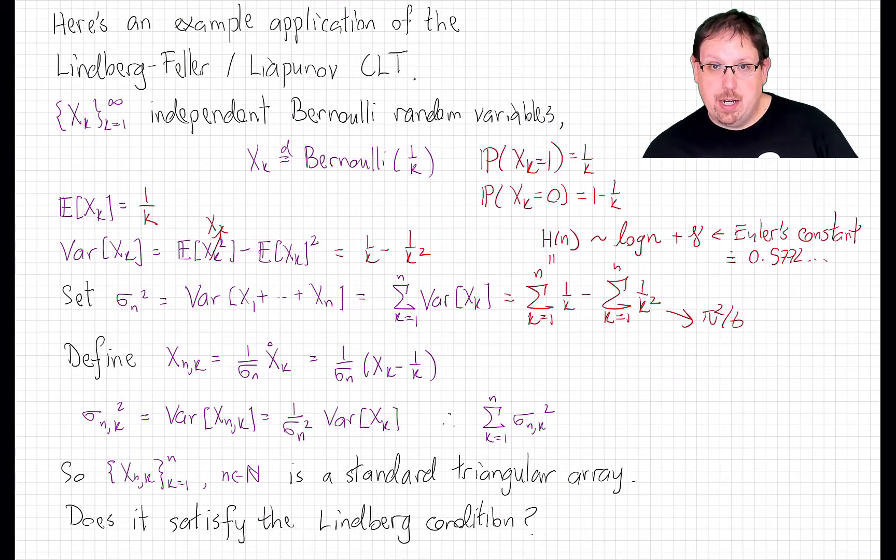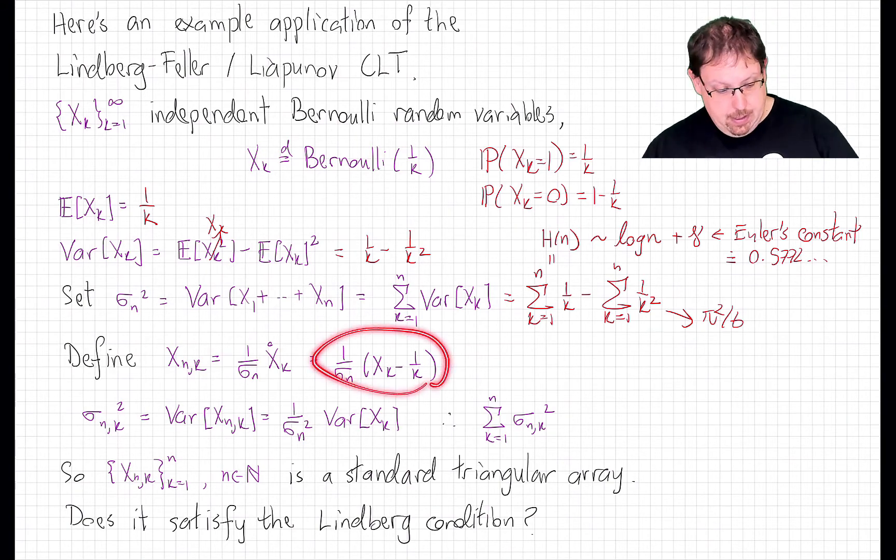If we're going to set up a triangular array of these, we need the sum of the first n to have variance 1 for each n. And so what that means is that, following the setup in the standard central limit theorem, we let X_nk be X_k centered divided by the square root of the variance, the standard deviation, of the sum of the nth row as such.